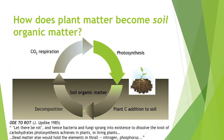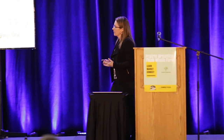Coming back to the idea of where carbon comes from: plants take energy from the sun and CO2 from the atmosphere and build it into their tissues through photosynthesis. Those crop residues and root materials get incorporated into the soil; microorganisms decompose them and that builds soil organic matter. In the process of decomposition, microbes breathe out some proportion of that carbon as CO2 and return it to the atmosphere. As John Updike wrote in his poem Ode to Rot: 'Let there be rot, and hence bacteria and fungi sprang into existence to dissolve the knot of carbohydrates photosynthesis achieves in plants.' It's not all about carbon — it's also about cycling of phosphorus, nitrogen, and other critical elements.